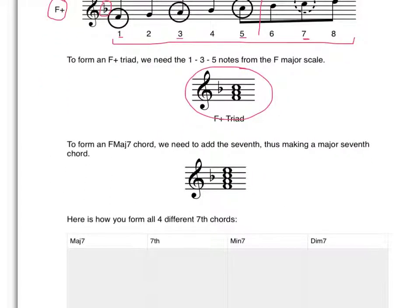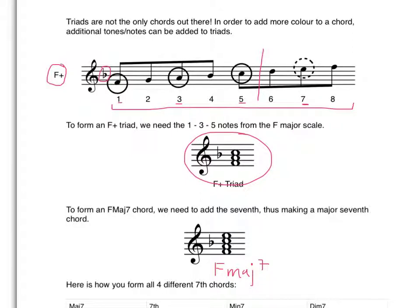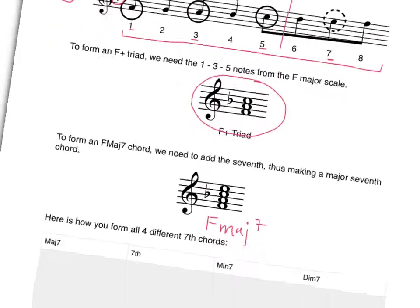We've taken the one, three, and five, but we've added now a seventh note, and that makes what you call a major seventh chord. If I were to write that down here, this is called the F major seven. It's called a major seven because we just chose the seventh note of the scale and added it in. We didn't change anything - it's all part of the major key signature of F major.